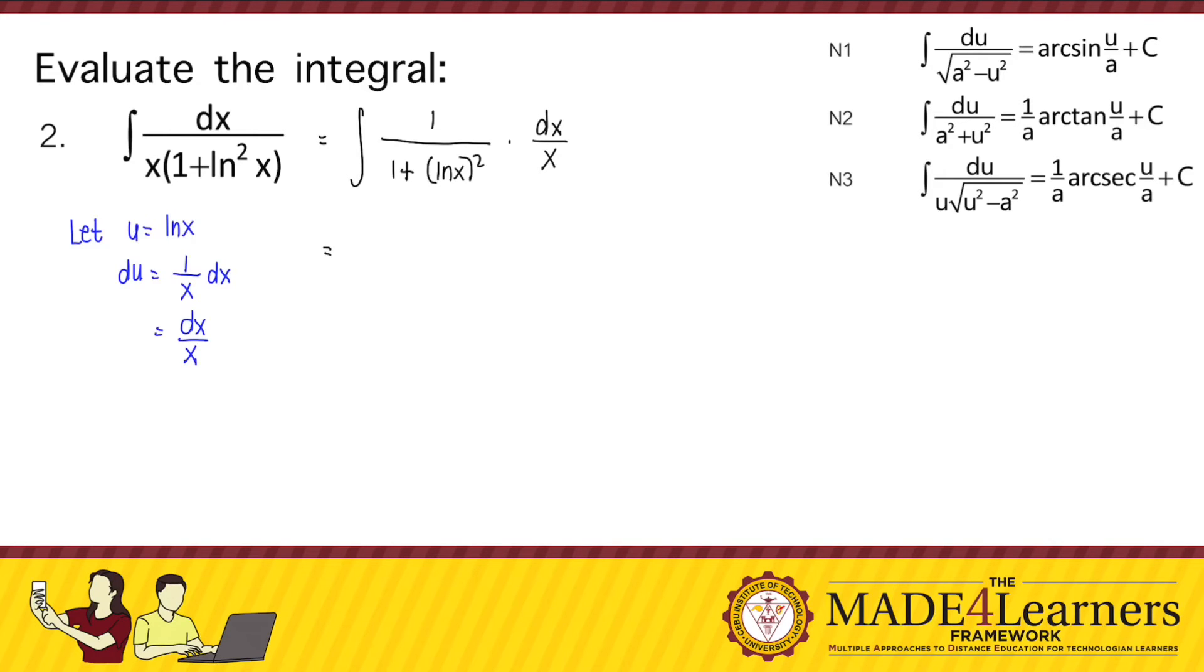Then, we substitute that in our given. So that's 1 over 1 plus u squared and dx over x is du. It's now exactly like n2 wherein a squared is equal to 1 so that a is equal to 1.